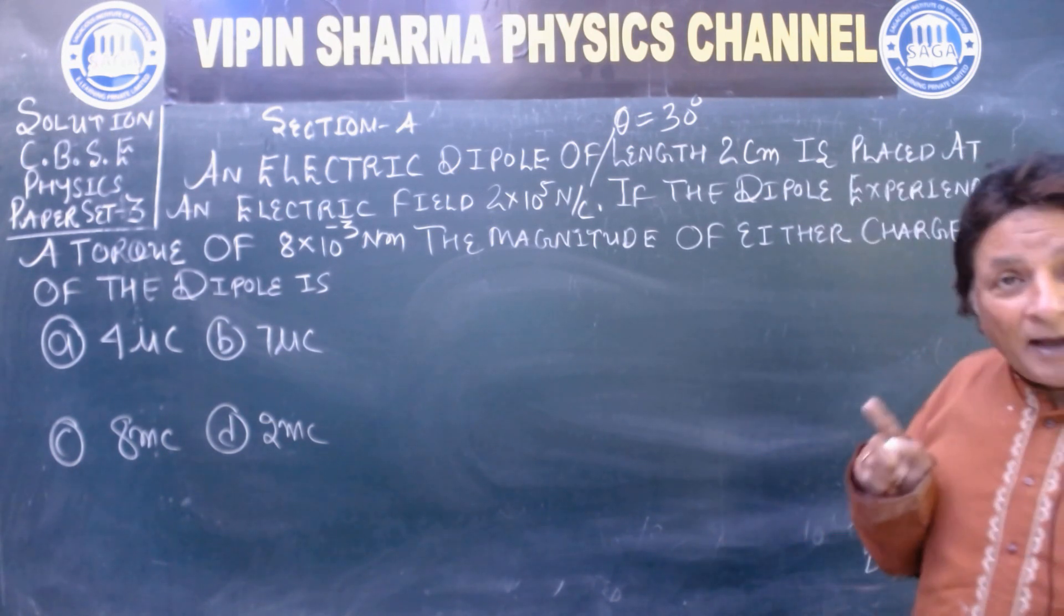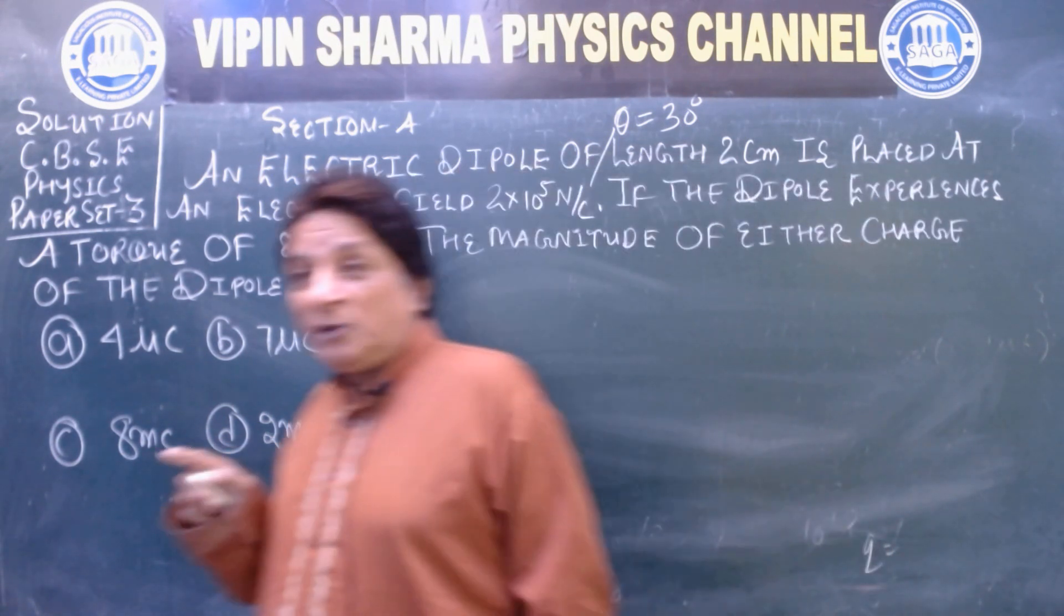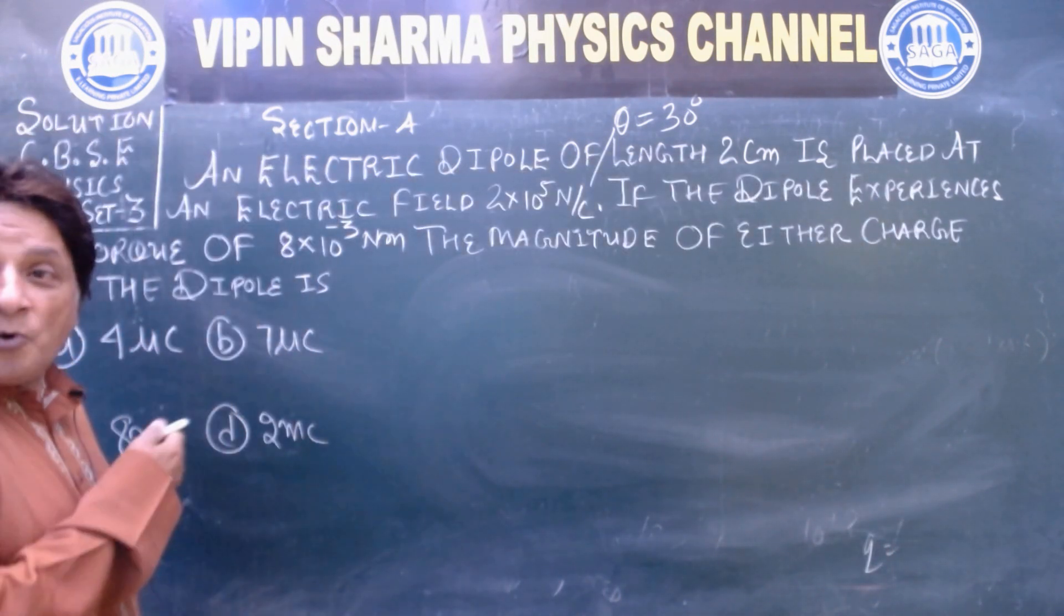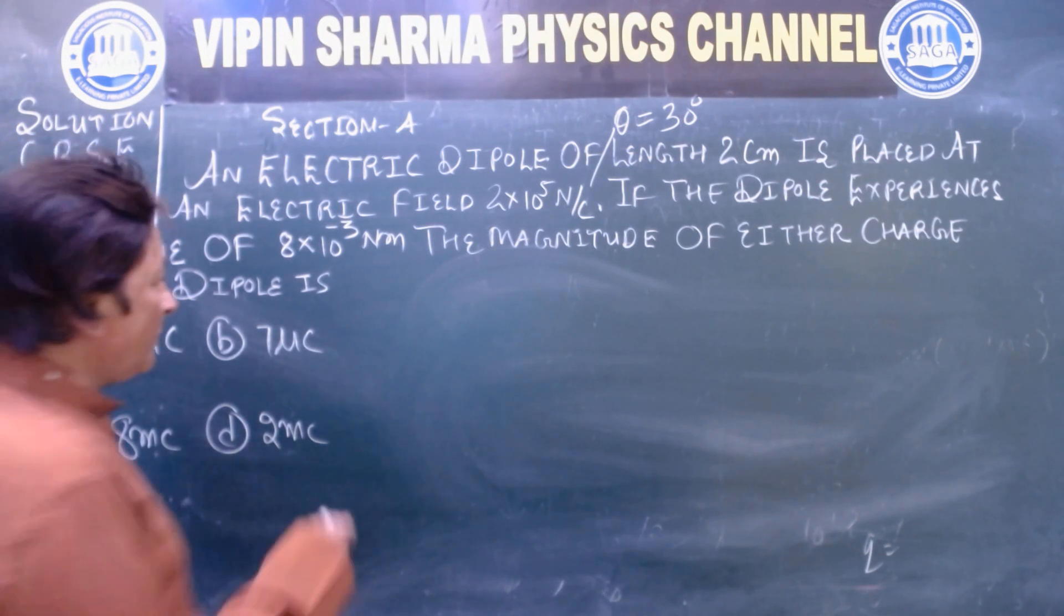The dipole experiences a torque of 8 × 10^-3 Newton meter. What is the magnitude of either charge? 4, 7, 8 millicoulomb, 2 millicoulomb. Let's do it.